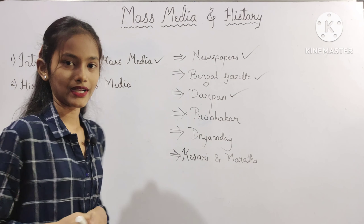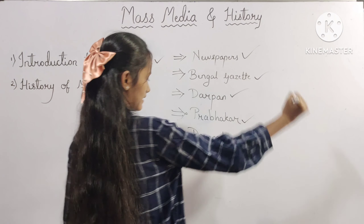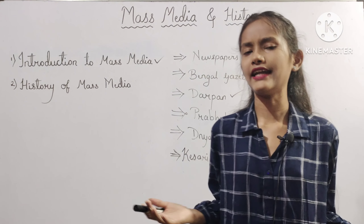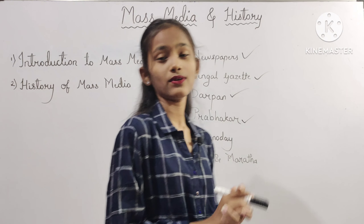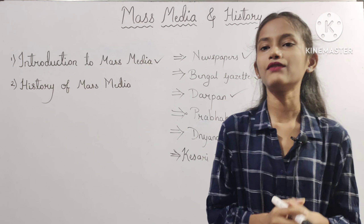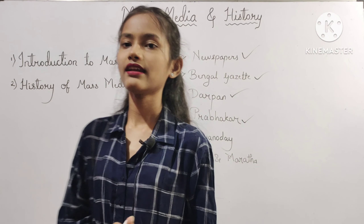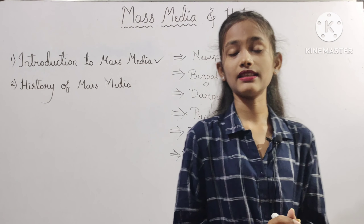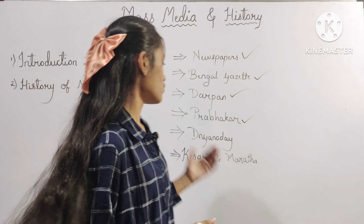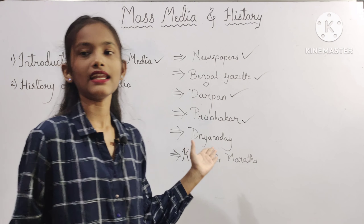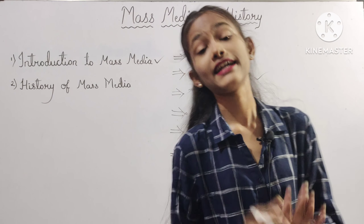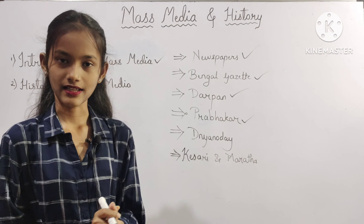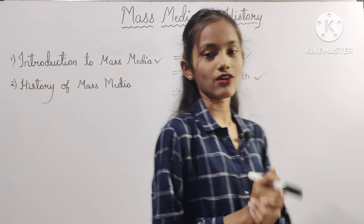The next newspaper is Dyanodaya. Dyanodaya printed a map of Asia in 1842 and a map of Europe in 1851. The honour of printing and illustration for the first time in an Indian newspaper goes to Dyanodaya. Dyanodaya ne Asia ka map 1842 mein aur Europe ka map 1851 mein nirmaan kiya tha.